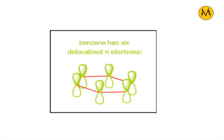You can see a benzene ring. There are p orbitals perpendicular to the plane of the molecule. Benzene is an aromatic compound. What happens in an aromatic compound? Electron delocalization.